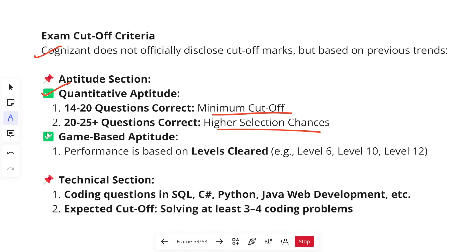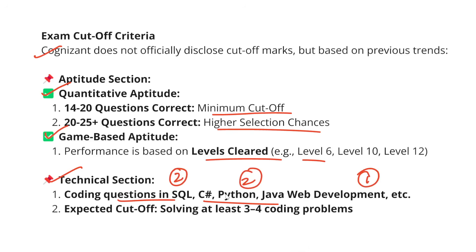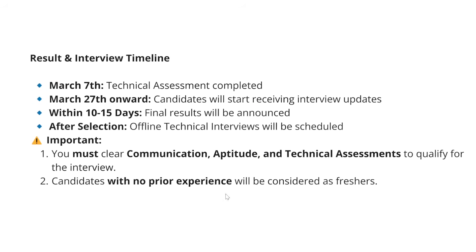For the game-based aptitude, performance is based on the levels you clear — the better the level and the more questions you attempt correctly, the better your result. For the technical section, you have coding questions based on SQL and domain-specific or cluster-specific coding questions — around five questions total. You should attempt at least three to four. If two to three are correct, there are good chances of getting a better role — either GenC, GenC Next, or GenC Pro.